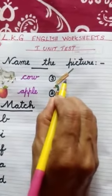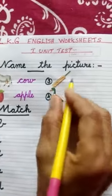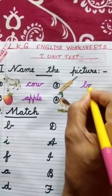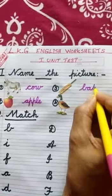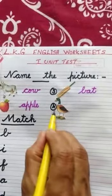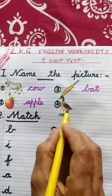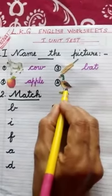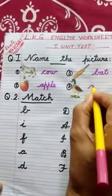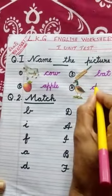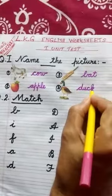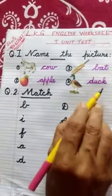Number 3 — tell me, which picture is this? Yes, bat. Spelling of bat: B-A-T. Bat. Number 4 — which picture is this? Tell me. Yes, duck. Spelling of duck: D-U-C-K. Duck.